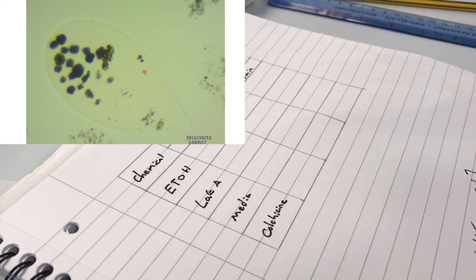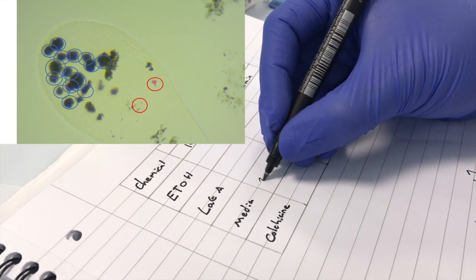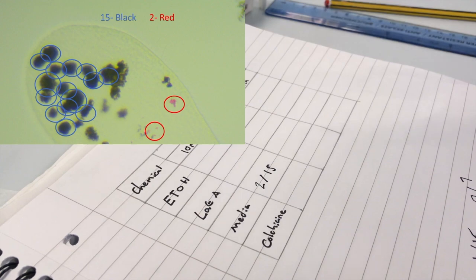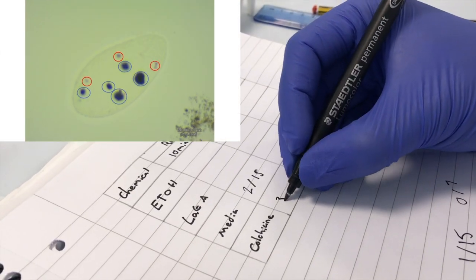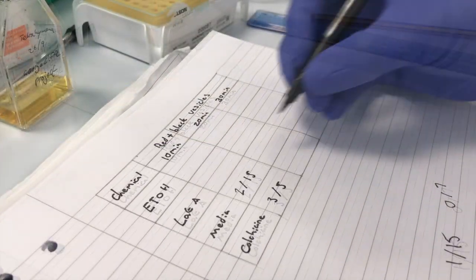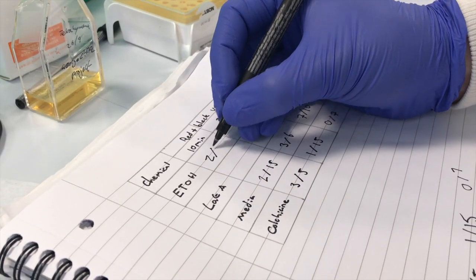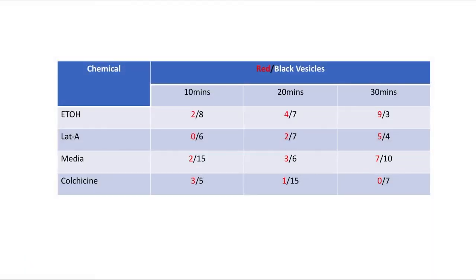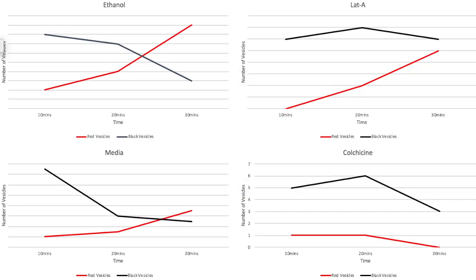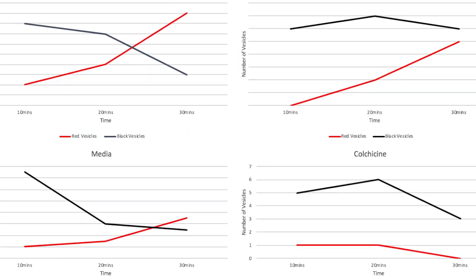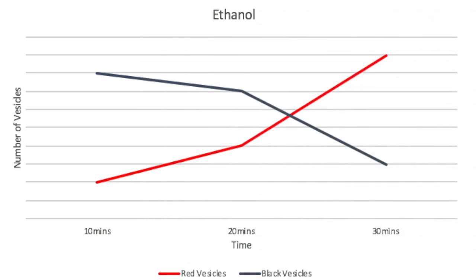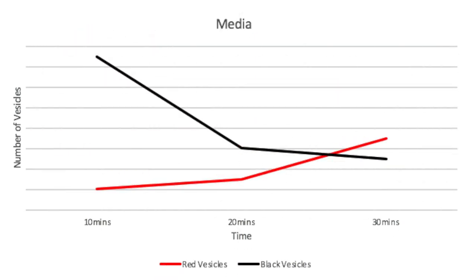Count the number of red and black vesicles in various cells, then record the average number of each vesicle. Continue until you have a result for each time point and every solution. Your results should look something like this, and can then be plotted onto graphs. In both ethanol and media solutions, there is a clear increase in red vesicles over time and a decrease in black vesicles over the same period.